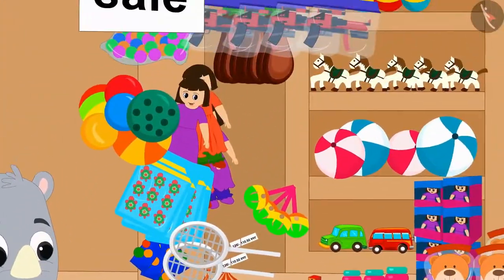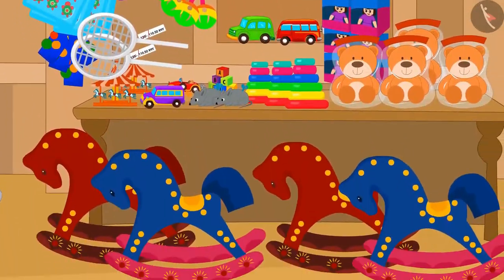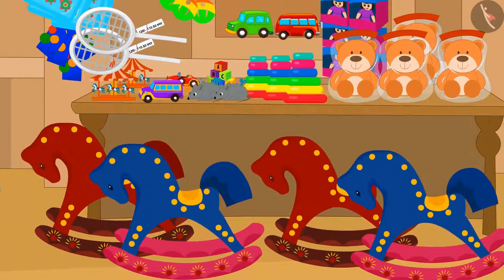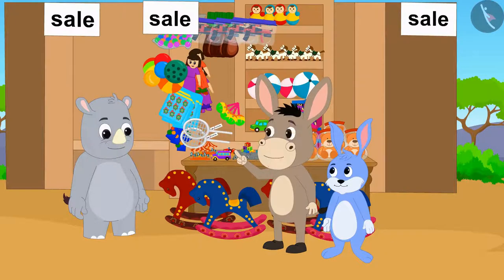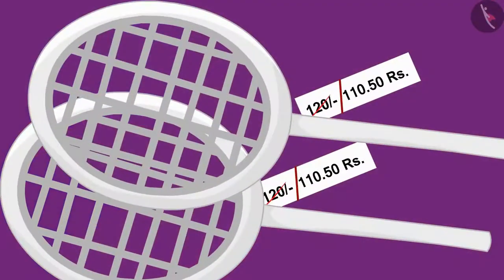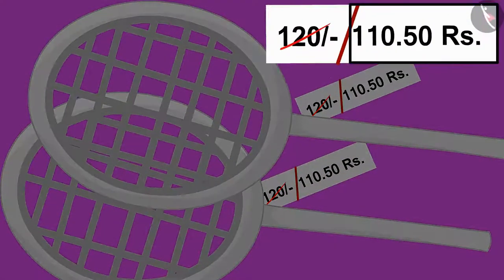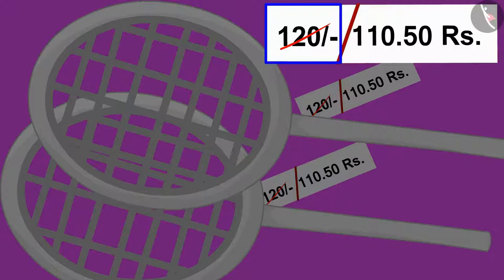There is a huge discount on toys at Gaggoo's shop in the sale. Bhoala wants to buy a new badminton racket. The new price, 110.50 rupees, has been written on this badminton racket by striking out the old price in this way.